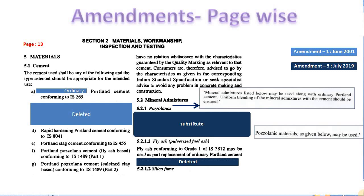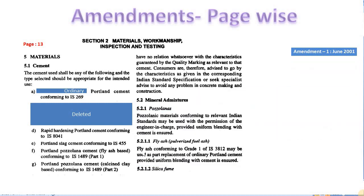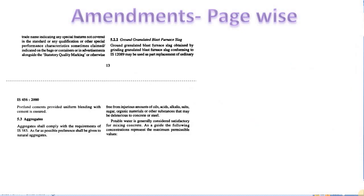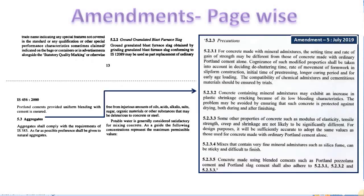Again, in the 5th amendment, in class 5.2.1, a generalized term saying 'Pozzolanic material as given below may be used' was substituted. In class 5.2.1.1, the last line 'uniform blending' was deleted. In the same page, last class 5.2.2, for ground granulated blast furnace slag, some precaution points were added as a new class 5.2.3.